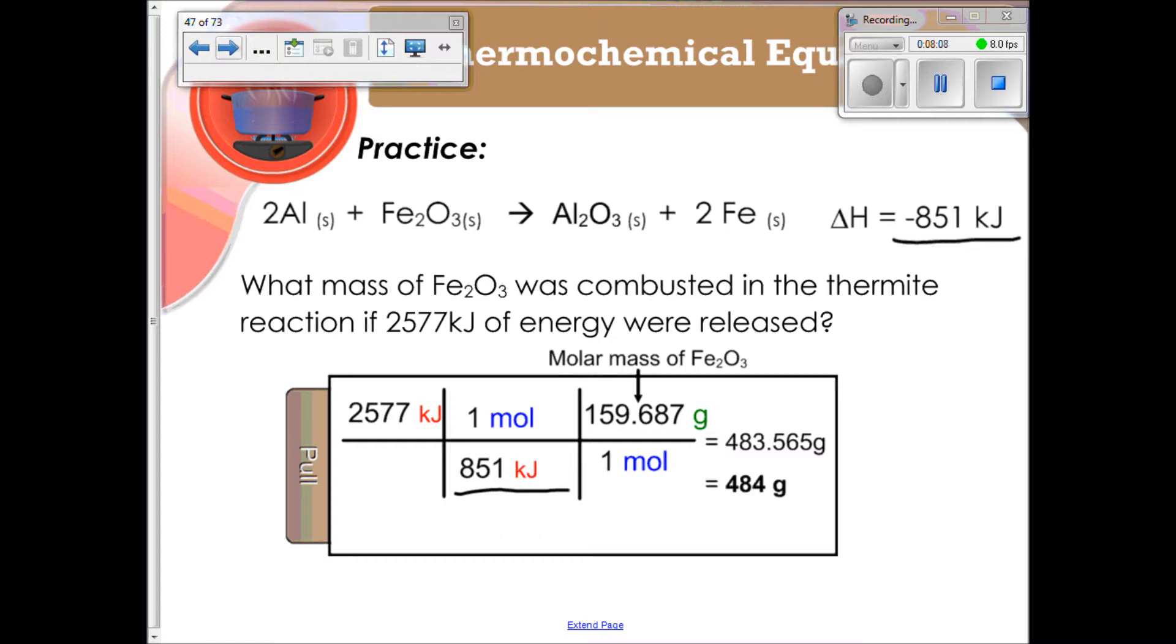we have 1 mole of Fe2O3. So where is that? Right here. Fe2O3. And then for every 1 mole of that, we have 159.687 grams of Fe2O3, that's the molar mass of iron 3 oxide. And when we solve it out, we get 483.565 grams.